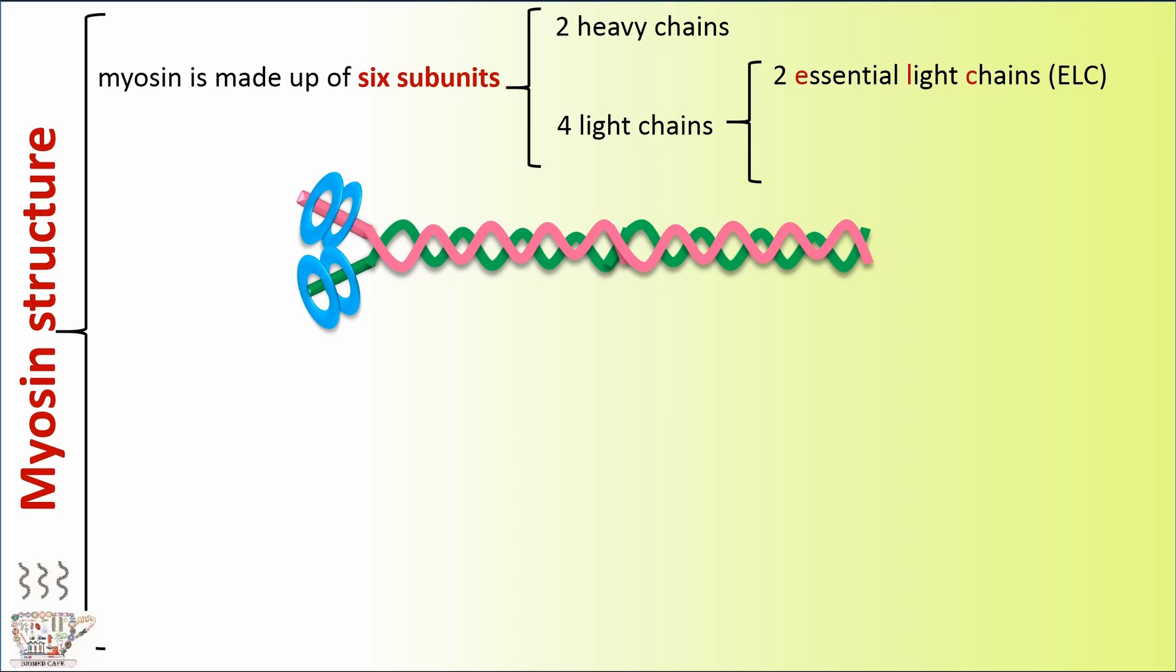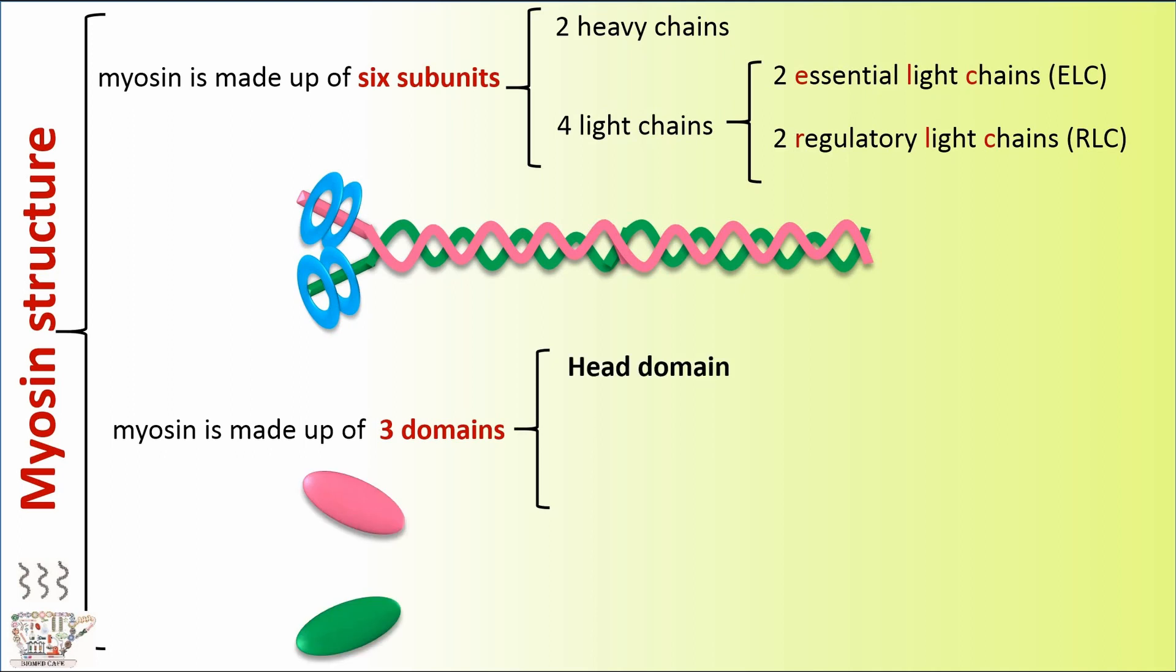Light chains are two essential light chains (ELC) and two regulatory light chains (RLC). Myosin is made of three domains: head domain, neck domain, and tail domain.